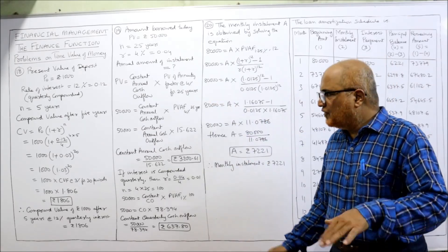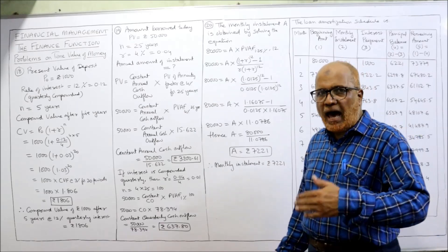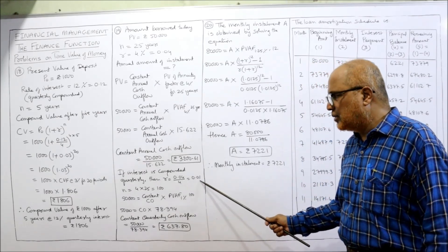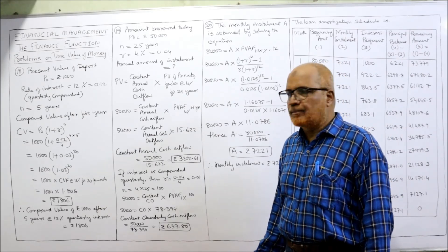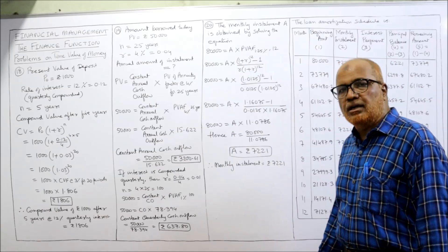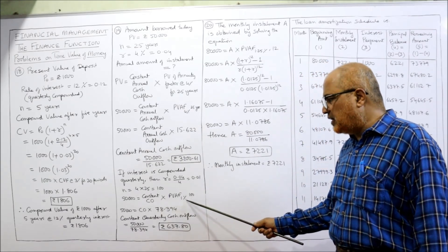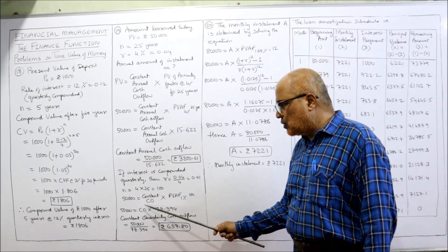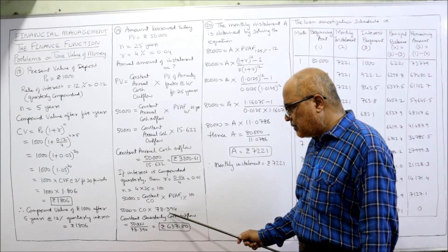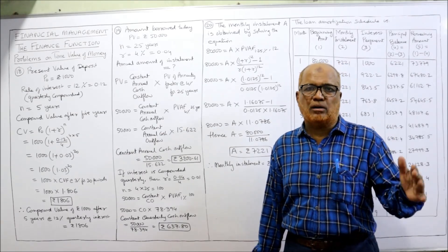If interest is compounded quarterly, then R = 0.04 ÷ 4 = 1% quarterly, and n = 25 × 4 = 100 periods. Substituting: 50,000 = Constant Cash Outflow × PV Annuity Factor at 1% for 100 periods. From the table, that factor is 78.394. Therefore, Quarterly Installment = 50,000 ÷ 78.394 = 637.8 rupees. This is the quarterly installment payable every quarter for 25 years.